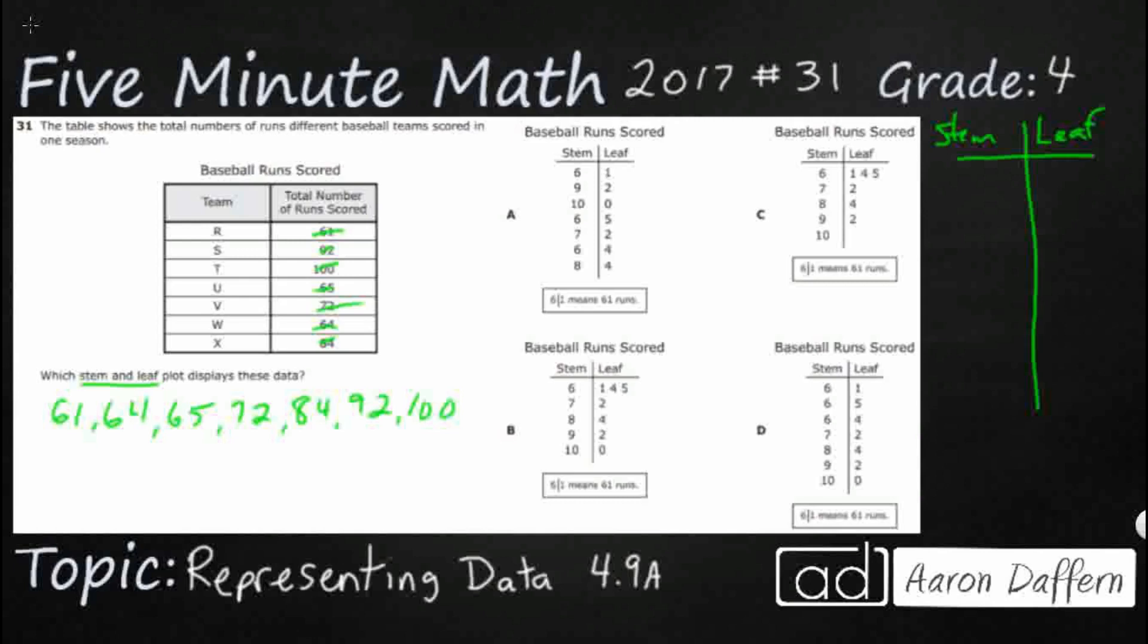But what we have is we have a little key. So let's just copy our key down here. So six and then a line and then one equals 61. All right, so I'm just going to abbreviate a little bit. So which means our stem is acting as our tens place. Just think of it like place value. Our leaf is acting as a ones place.